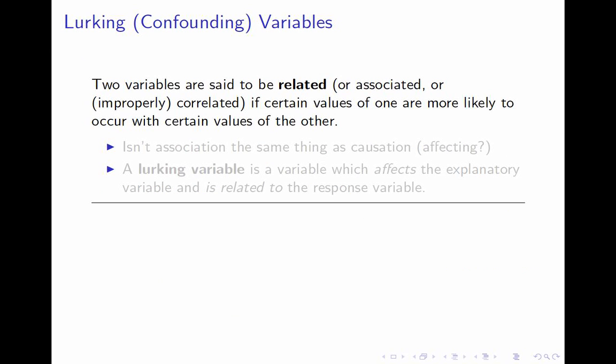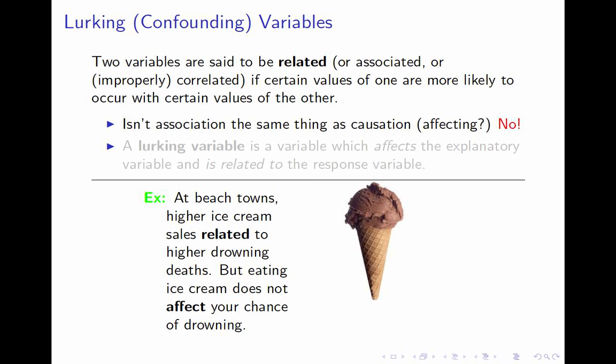On the other hand, two variables are said to be related — people also say associated, or correlated, though that isn't quite right as we'll learn later. Two variables are associated if certain values of one variable are more likely to occur with certain values of the other. For example, if you look at beach towns and examine how much ice cream is sold each day alongside how many drowning deaths there are, you'll find they are related: days when a lot of ice cream is eaten, there are more drowning deaths. But you would be wrong to conclude that eating ice cream causes you to drown.